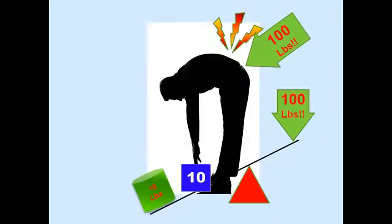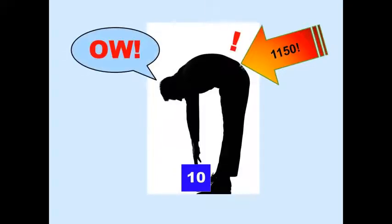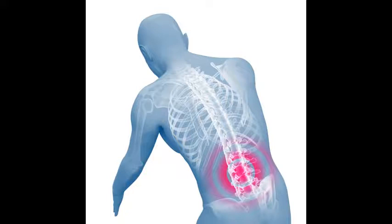Now add in the 105 pounds of the average human upper torso, and if this is how you lift all bent over with your legs straight, lifting a 10 pound object actually puts 1150 pounds of pressure on your lower back. No wonder people get bad backs.